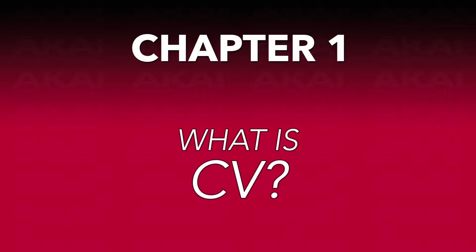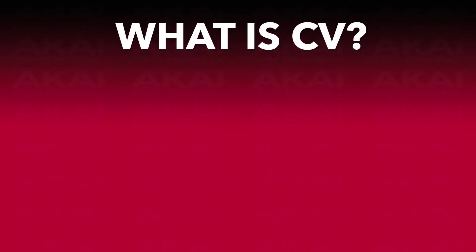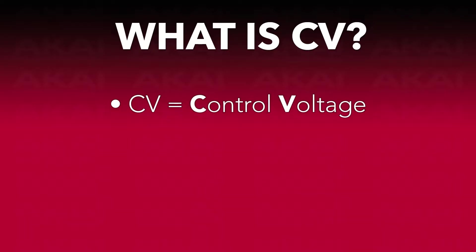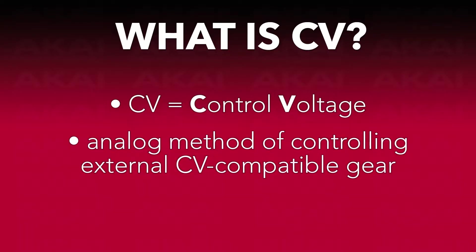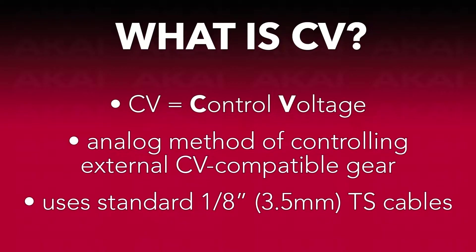Let's quickly cover what exactly CV outputs are and how they can be used. Simply put, the CV, or control voltage outputs, are an analog method of controlling oscillators, envelopes, and other parameters of external synthesizers, drum machines, and sequencers via standard 1/8-inch, or 3.5mm, TS cables. This is a very useful way to link your MPK Mini Plus with analog and modular units in your setup to be able to modify settings on the fly.